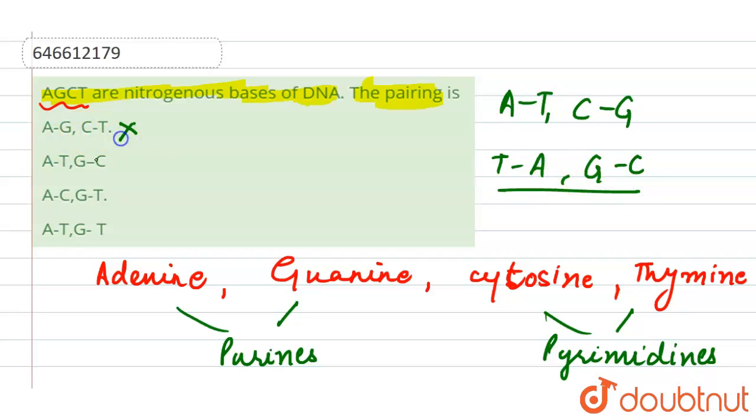So if we see the first option A-G, C-T, incorrect. A-T, G-C, this is correct. If we see this, it is also incorrect, and it is also incorrect. So here our correct answer is this one, option number two.